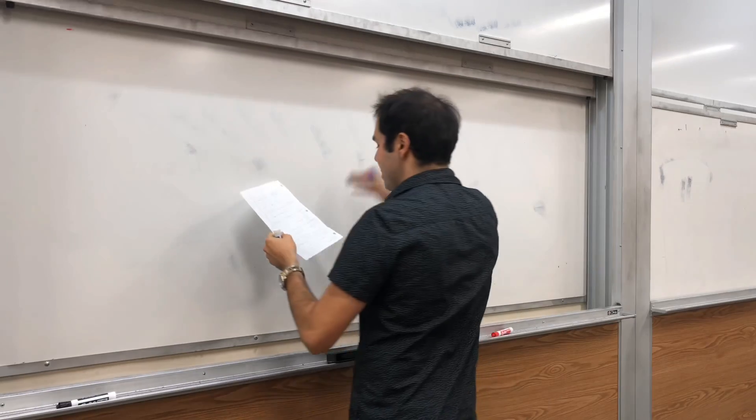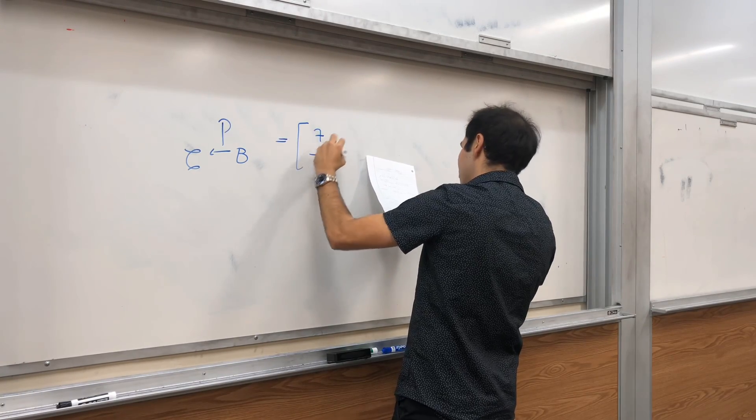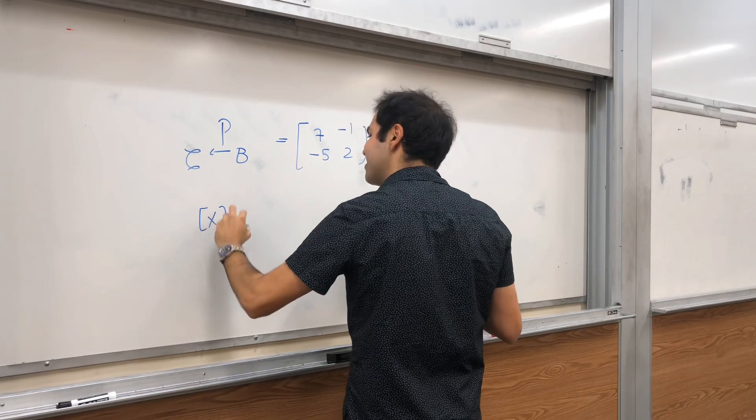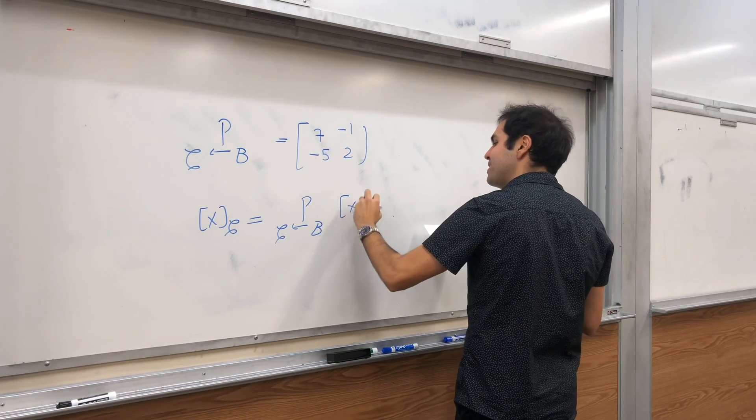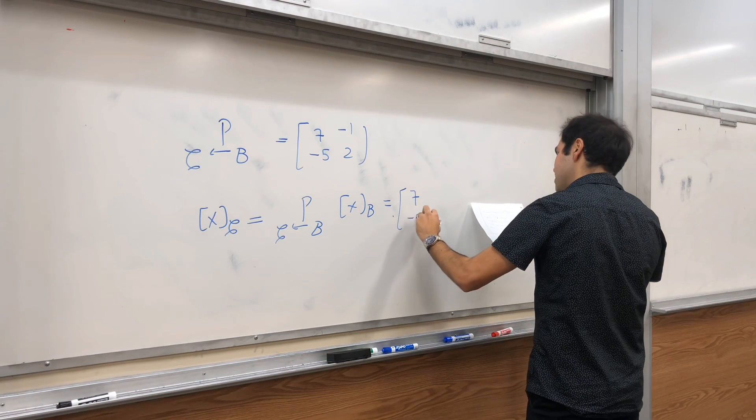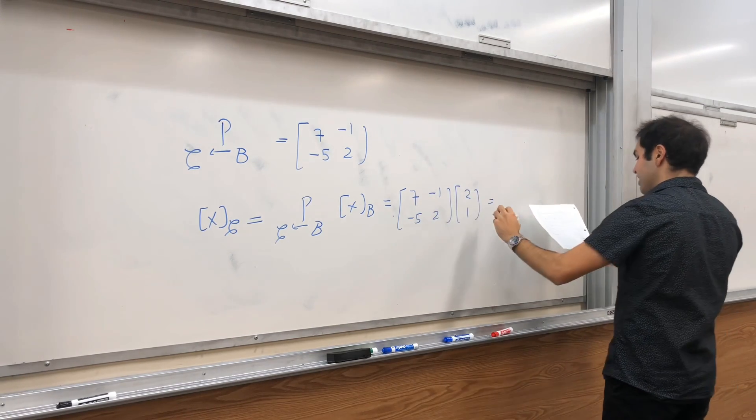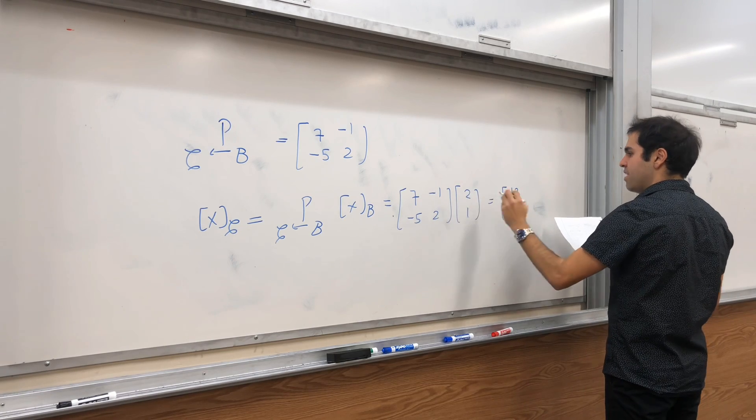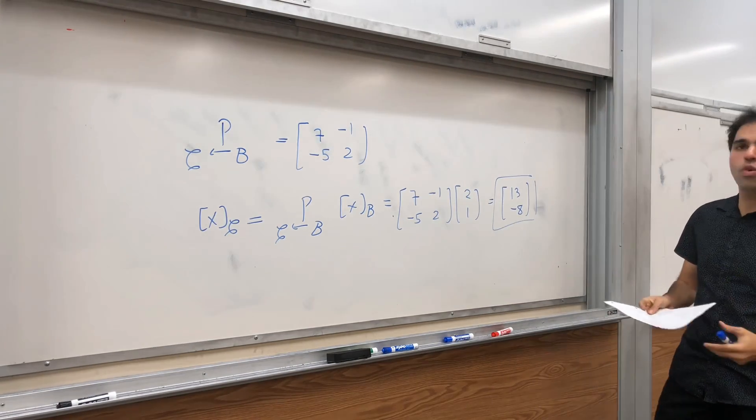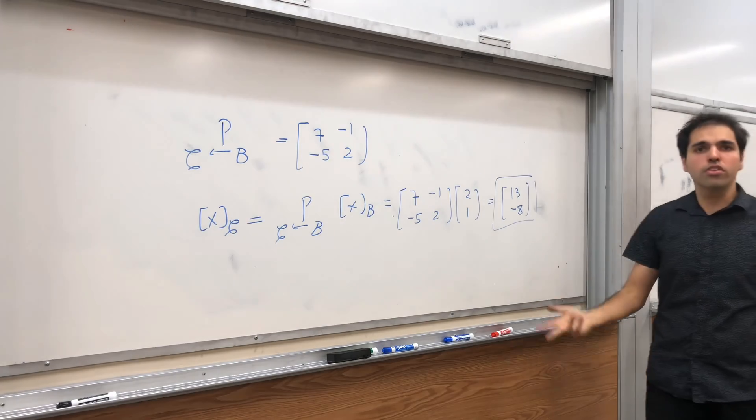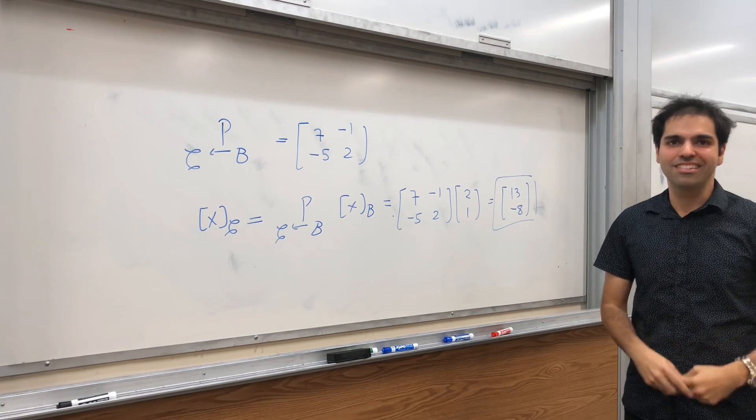our change of coordinates matrix, it's simply P, B, C. It's simply 7, minus 5, minus 1, 2. And, then, how do you get X, C? You just use this wonderful formula. You apply P, B, C to X, B. And, that just becomes 7, minus 5, minus 1, 2, times 2, 1. I believe you get 14 minus 1, which is 13. And, then, minus 10 plus 2, which is minus 8. And, that tells you that, if the original coordinates are 2, 1, what are the new coordinates? They're 13 and minus 8. And, the cool thing is, you didn't even have to go through figuring out what the vector X is. How cool is that?